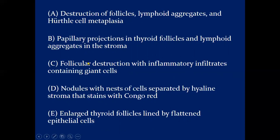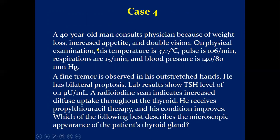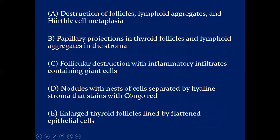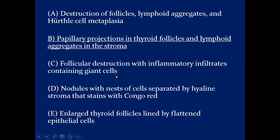All findings — double vision, fine tremor, and diffuse radioiodine uptake — clearly point to Graves disease. The answer is papillary projections in the thyroid follicles and lymphoid aggregates in the stroma. When you look at the diagram, you will see the infoldings and papillary projections characteristic of Graves disease.